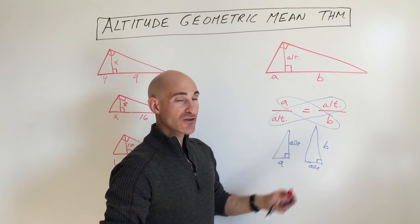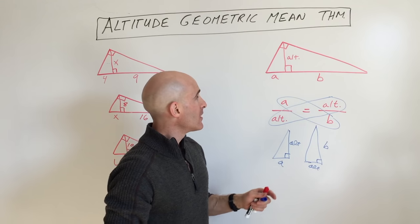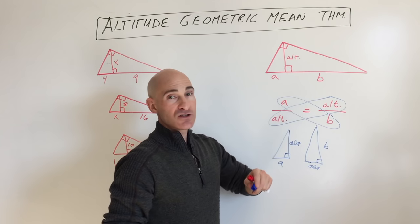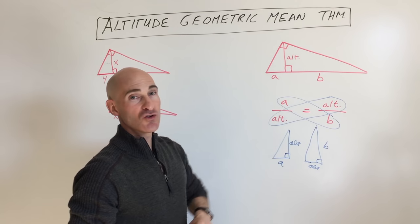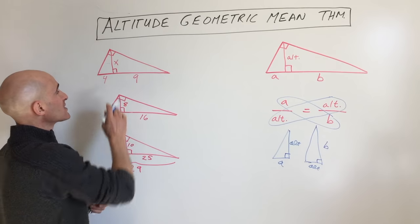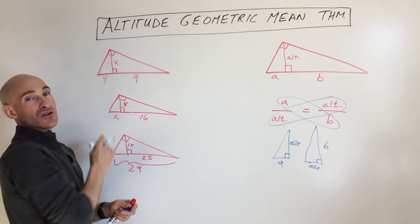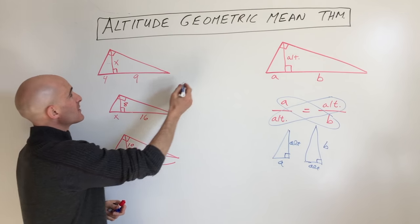These two triangles are similar, so the corresponding sides are proportional. But practically speaking, how do we use this? Let's look at some examples. If we want to find this altitude x, we set up a proportion.